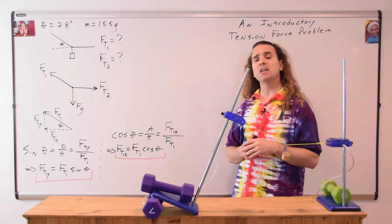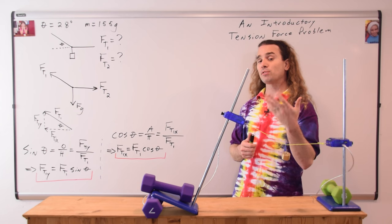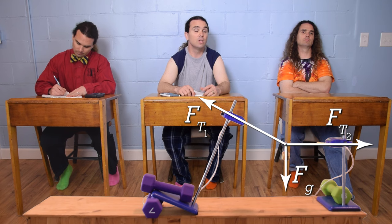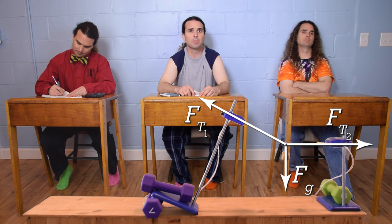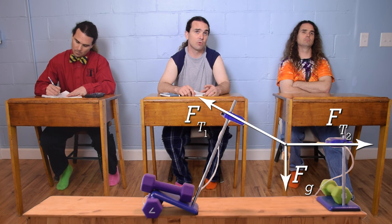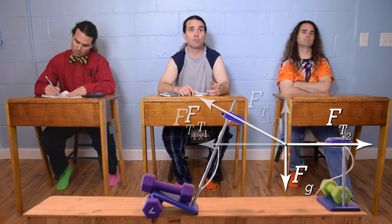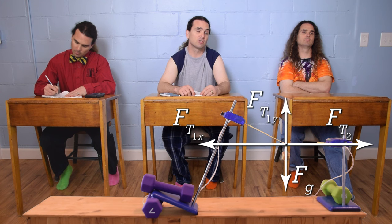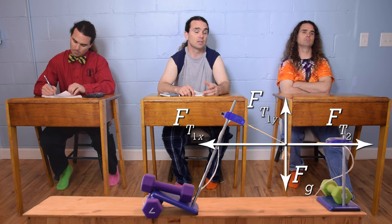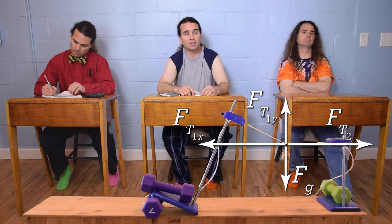Bobby, could you please tell me what step number three is and do it? We need to redraw the free body diagram. We still have the force of gravity down and the force of tension two along the string to the right. Instead of force of tension one, we now have force of tension one in the x direction and force of tension one in the y direction.